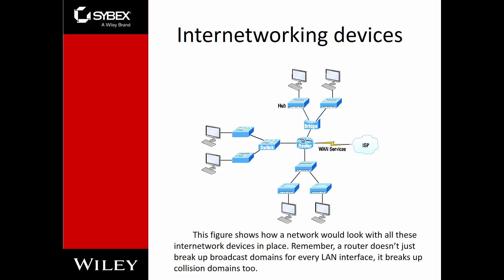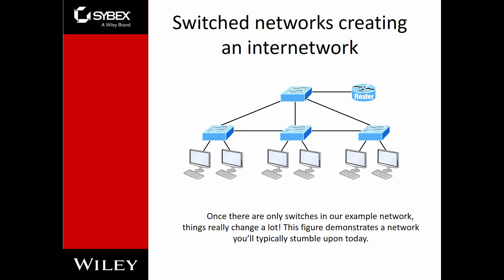Other internetworking devices could include things like bridges, but they're antiquated. Realistically, bridges and hubs are not found in today's modern networks. In a switched environment, notice that switches may form a giant loop. If a broadcast is sent out, it will be sent to that router, which will broadcast to everyone. Every device that gets it will rebroadcast it, and we'll end up with a broadcast storm, because devices will forward it out all ports except the one it received it on, and it will just keep looping.